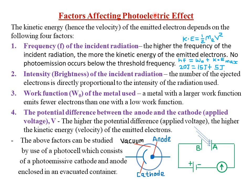Today we are looking at the factors affecting the photoelectric effect, whereby the kinetic energy, hence the velocity of the emitted electrons, depends on the following four factors. Remember, kinetic energy is equal to half m_e v squared, so if you keep the mass of the electron constant, then kinetic energy will always be directly proportional to the velocity of the emitted electrons. Our first factor is the frequency f of the incident radiation.